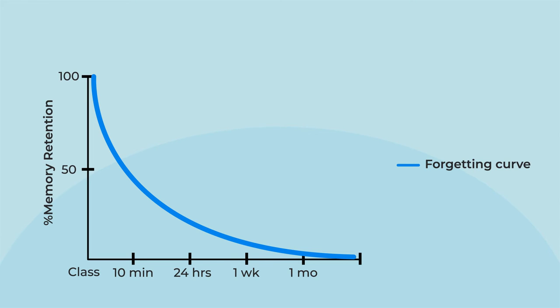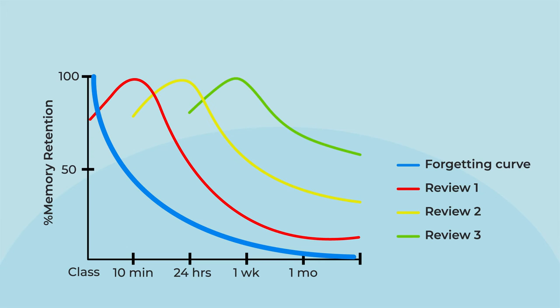The way to beat the forgetting curve is to do periodic reviews of the material. If you review the material after class, you remember it again, but you still lose a large portion of the material. Reviewing the material a day later, a week later, and a month later reinforces the material. Each review helps you retain more of the material.